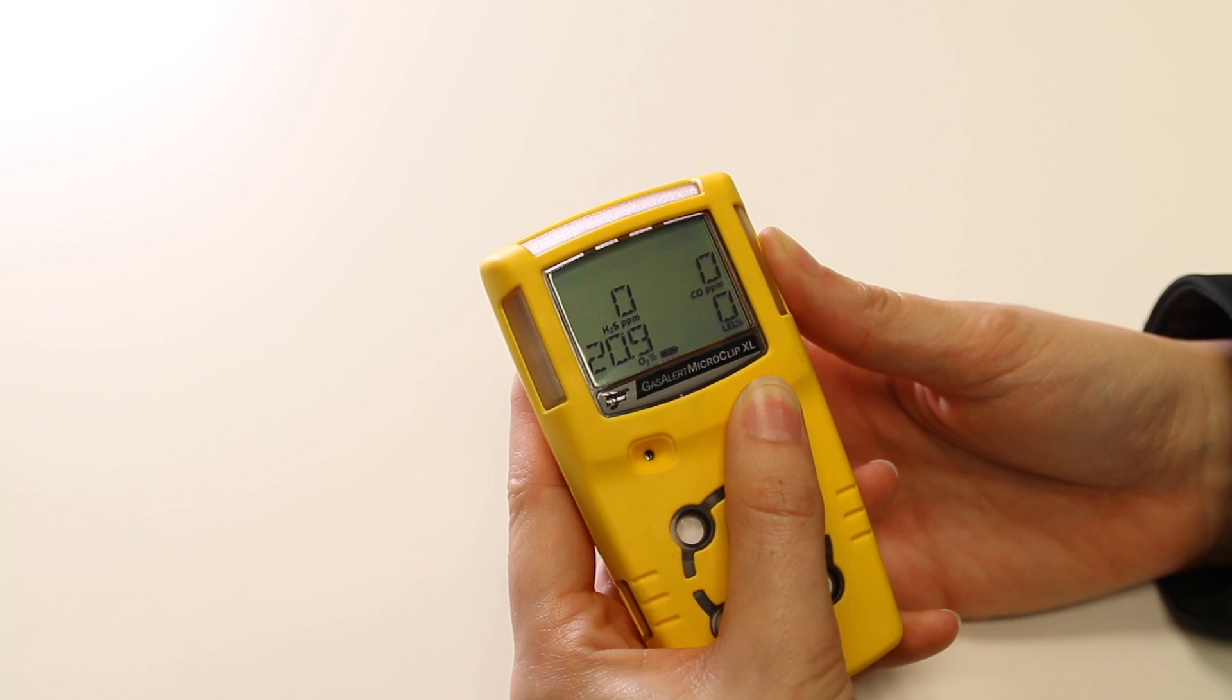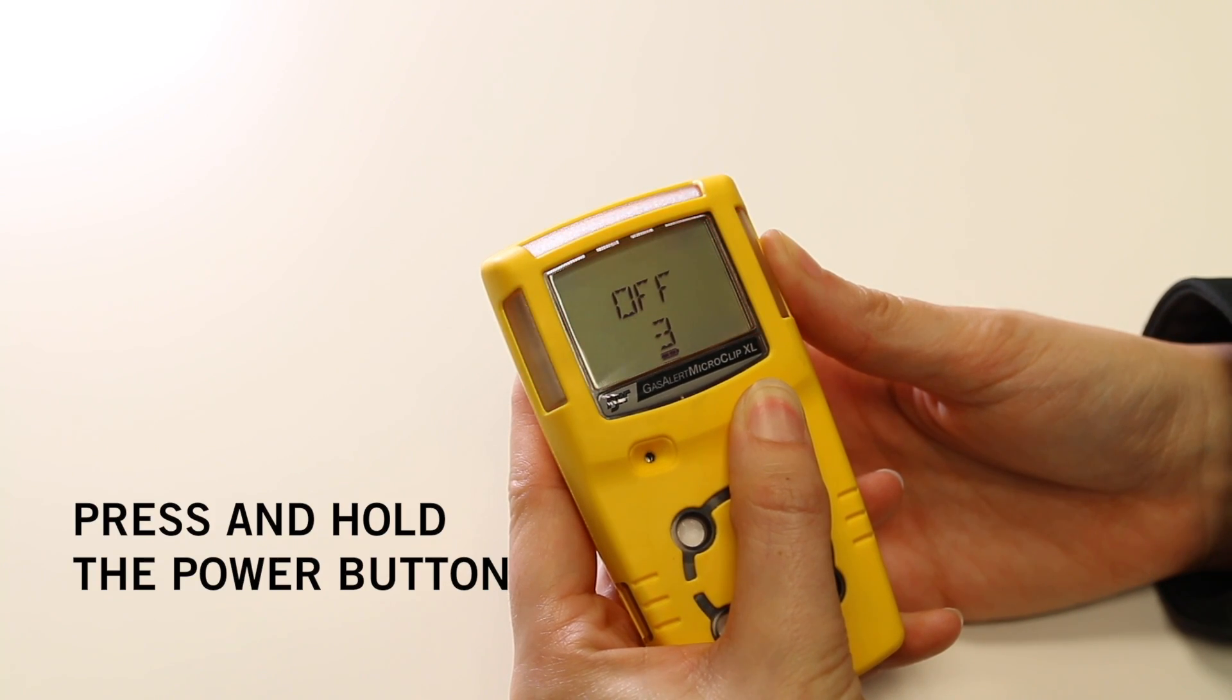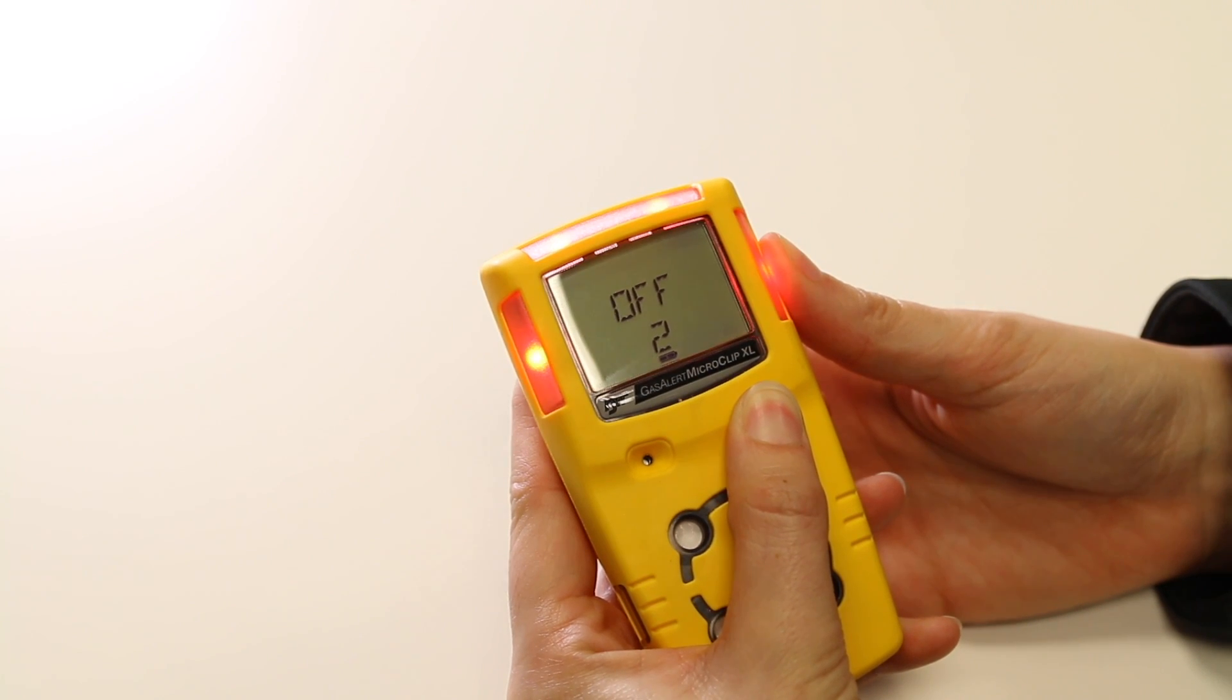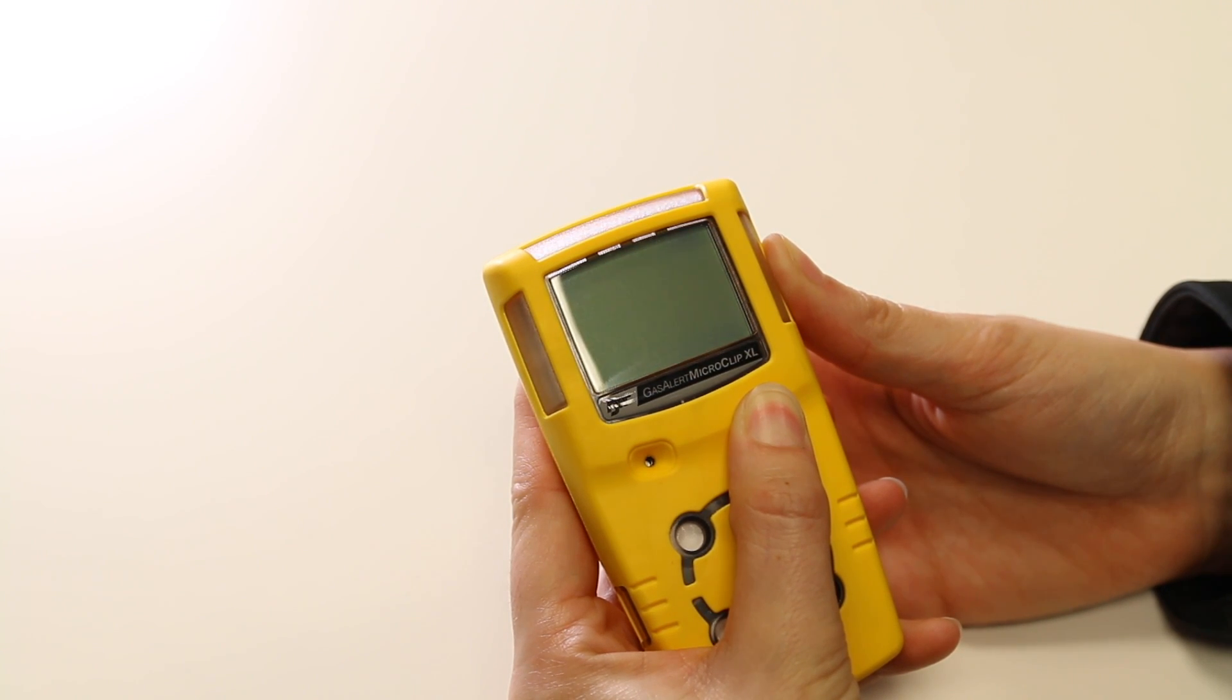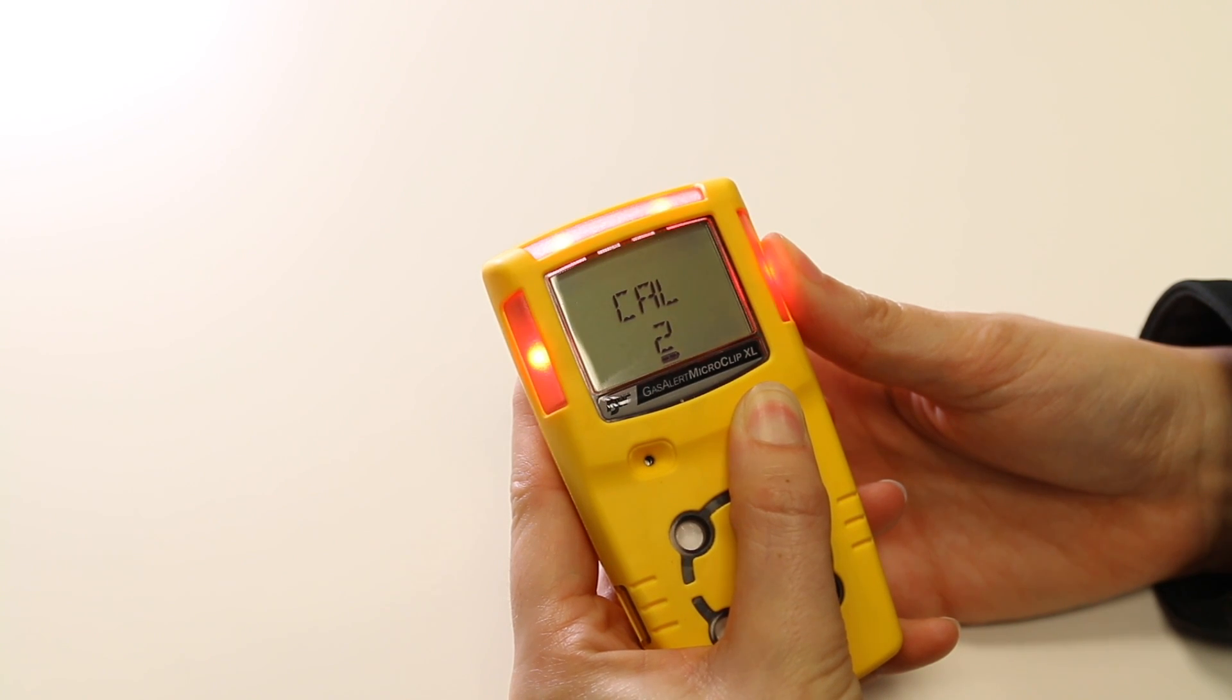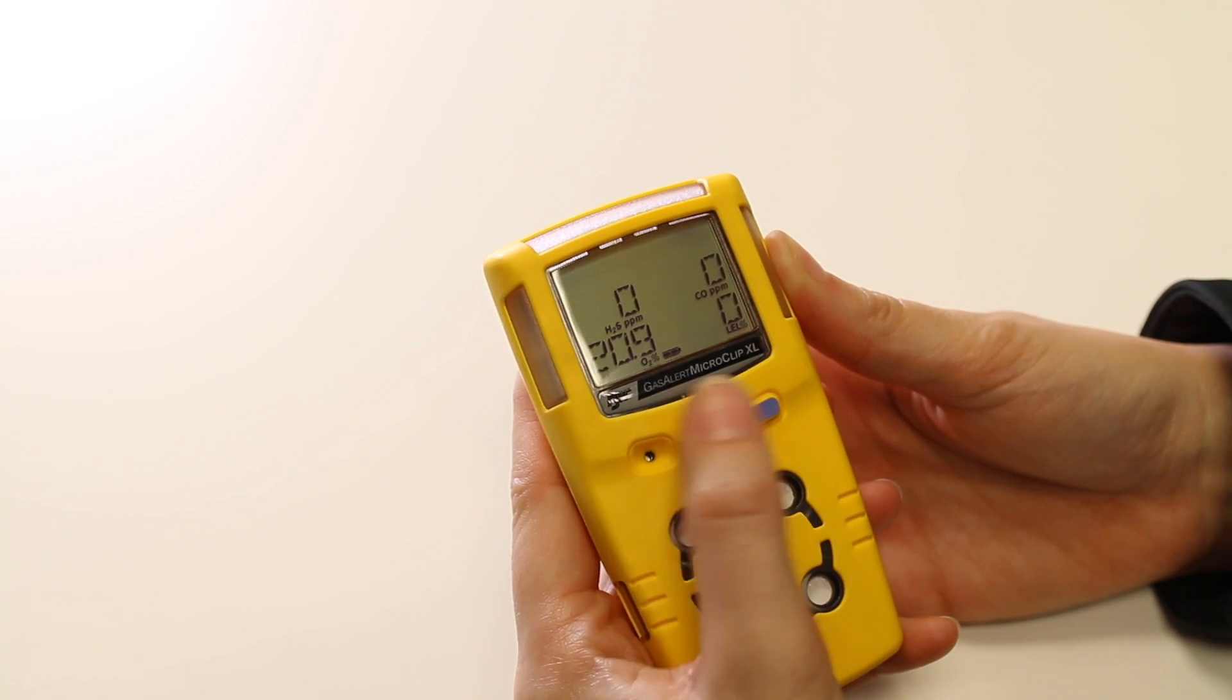To get into the calibration menu press and hold the button down whilst the detector performs the off countdown. Continue holding the button whilst the LCD briefly turns off. It will then activate again and perform a cal countdown. Keep holding the button down until this countdown is complete and the unit has entered calibration mode.